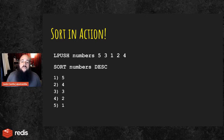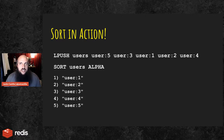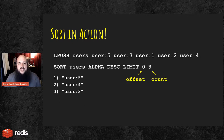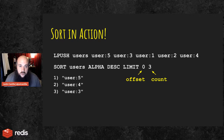For alphanumeric combinations, we add the ALPHA option and it will sort lexicographically. Of course the descending option works as well. You can also use the LIMIT option followed by two numbers: the first is the offset — where you want to start — and the count, how many you want to display. This is great for pagination.